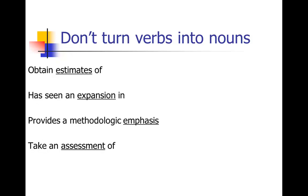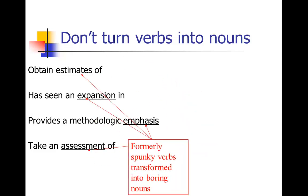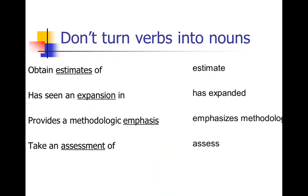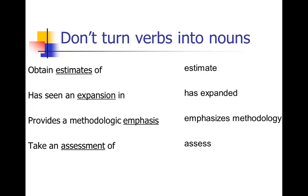There are lots of examples of this. Here's a whole bunch of instances we often see in this type of writing: 'obtain estimates of,' 'has seen an expansion in,' 'provides a methodologic emphasis,' 'take an assessment of.' All of those are examples where we had a nice spunky verb — estimates, expands, emphasizes, assesses — and for some reason we took those nice spunky verbs and turned them into really boring, clunky nouns: estimate, expansion, emphasis, assessment. Then not only do we do that, we pair this boring noun with a really boring verb: obtain, has seen, provides, take. So turn all of those back into the nice direct spunky verb: estimate, has expanded, emphasizes methodology, and assess. We don't need all those extra words.